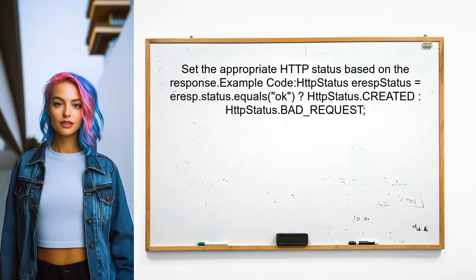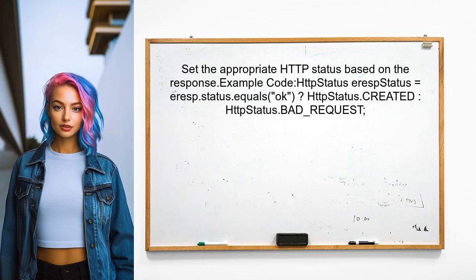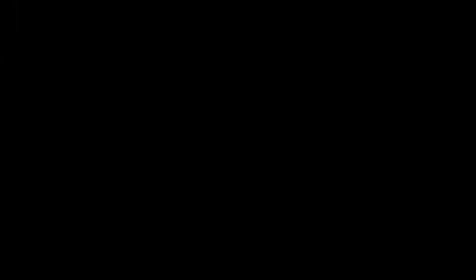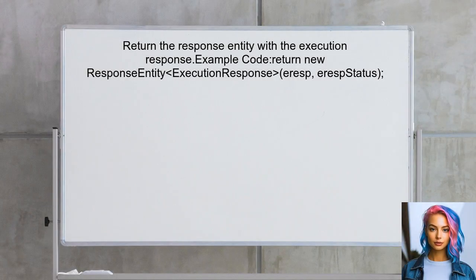After updating the response object, the user should set the appropriate HTTP status based on the response status. This ensures that the caller receives the correct status code. Finally, the user should return the response entity with the execution response and the determined HTTP status. This completes the process of waiting for the Kafka operation to finish before responding.